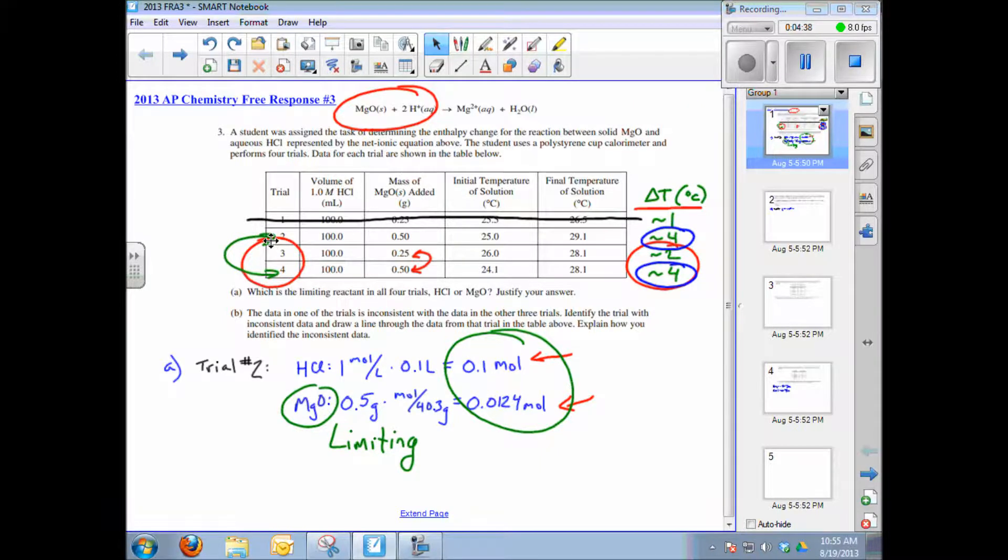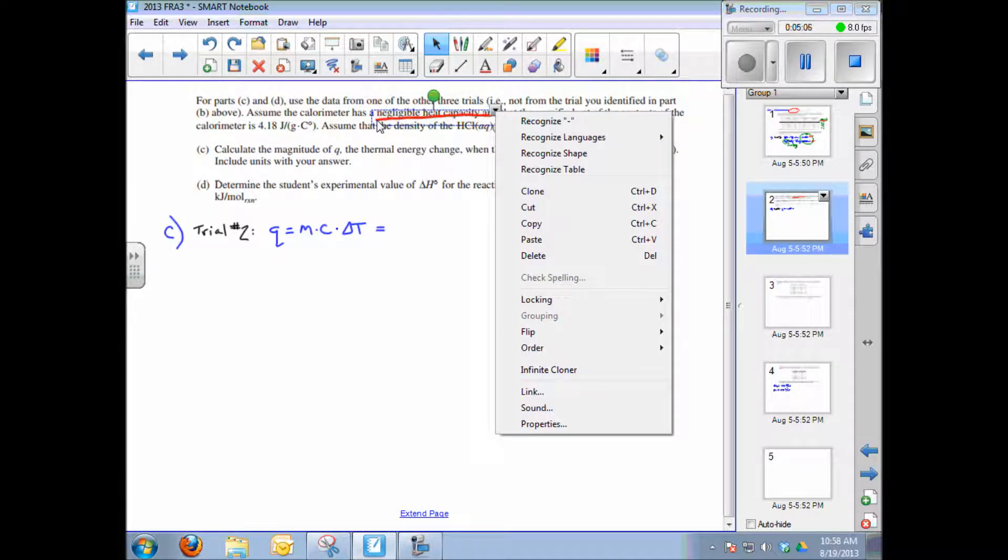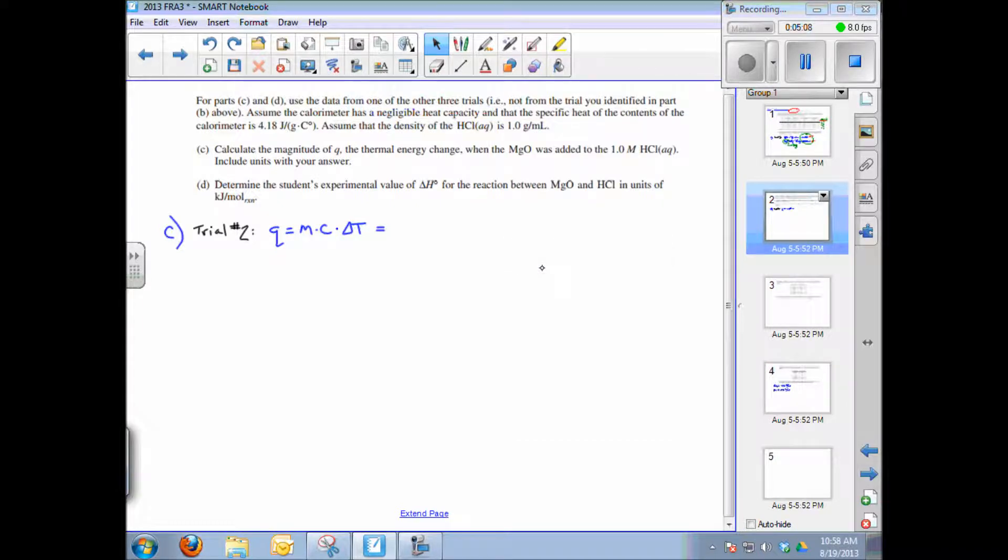Question C: Calculate the magnitude of the heat generated when magnesium oxide was added to the 1.0 molar HCl. Include units with your answer. This is using any of the three trials. There are some assumptions: the calorimeter does not absorb any heat from the reaction, the specific heat of the contents is 4.18, that's the heat of water, and the density of the HCl is 1 gram per mL.